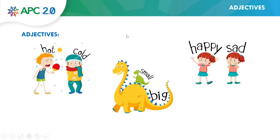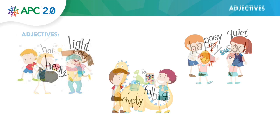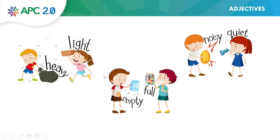We are going to practice pronunciation: hot, cold, small, big, happy, and sad. Continue with us: heavy, light, empty, full, noisy, quiet. One more time.